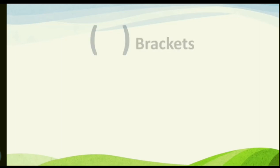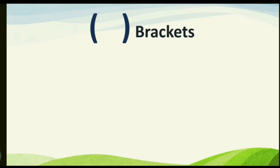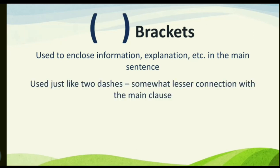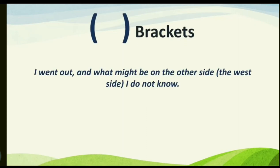Now we move on to brackets. Brackets are used to enclose information or explanation within a main sentence, used where the information has a somewhat lesser connection with the main clause — similar to two dashes. For example: 'I went out and [what might be on the other side] I do not know.' This is how we use brackets.